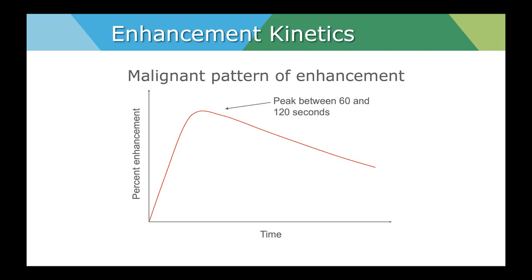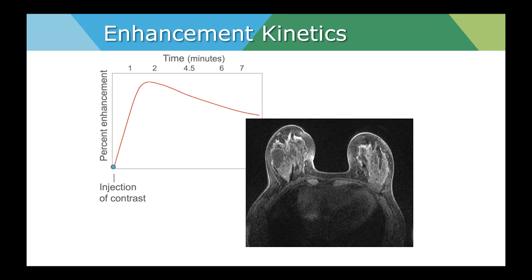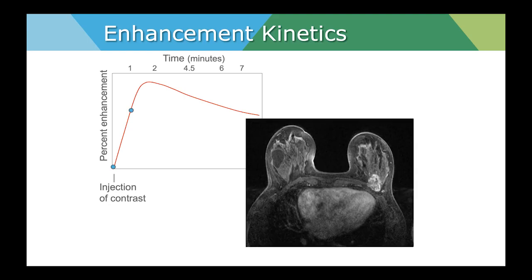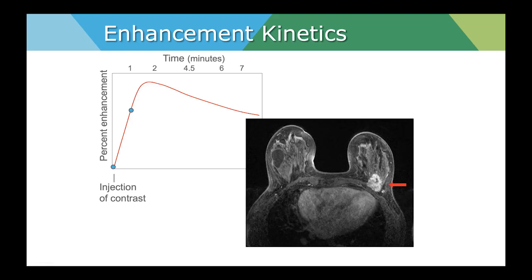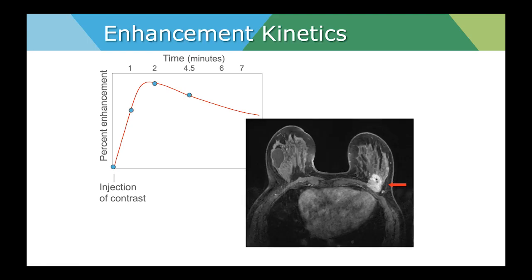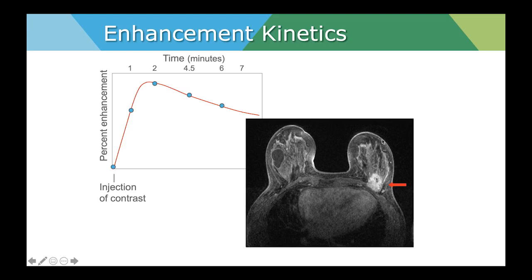Looking at the model of signal intensity over time for a malignant lesion, we find peak enhancement between 60 and 120 seconds. This T1 fat-suppressed pre-contrast image includes a large cancer that is somewhat difficult to see because it has similar signal intensity to normal dense fibroglandular tissue. However, as soon as we administer contrast, the heart becomes bright as well as this cancer invading the prepectoralis. Over time that continues to enhance, and then we slowly see enhancement decrease in background tissue, which starts to enhance later.